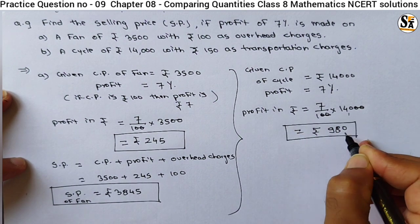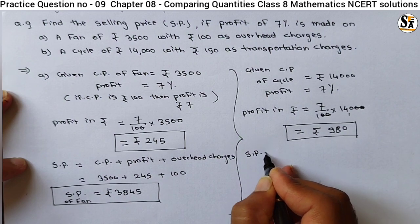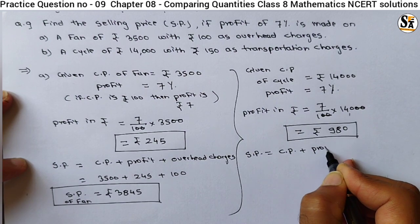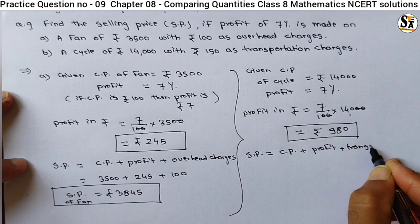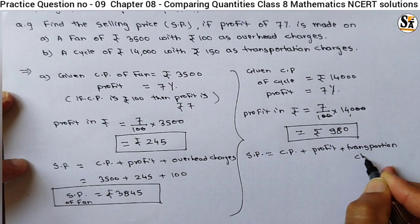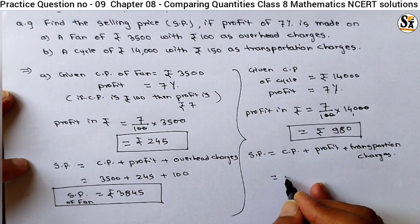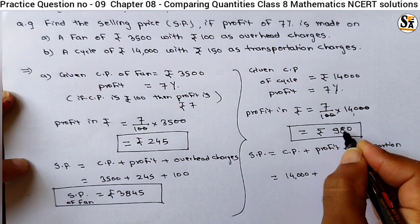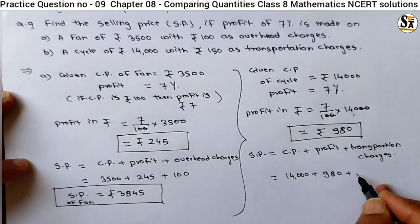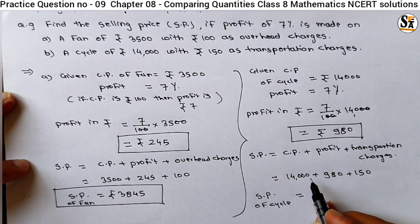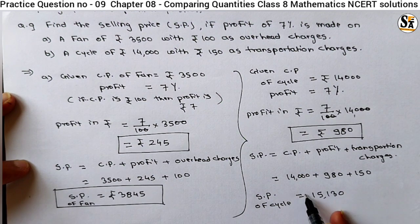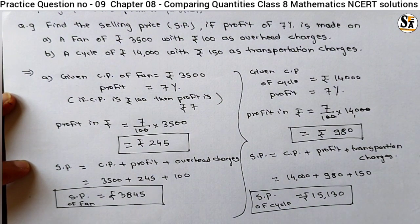We got profit in rupees — 980. We know selling price equals cost price plus profit. Here, transportation charges are also given, so we add those. Cost price is rupees 14000, profit is 980, and transportation charges are rupees 150. Adding all this, we get the selling price of the cycle equal to rupees 15130. It is very simple to calculate the selling price when overhead and transportation charges are given. These are our two answers.